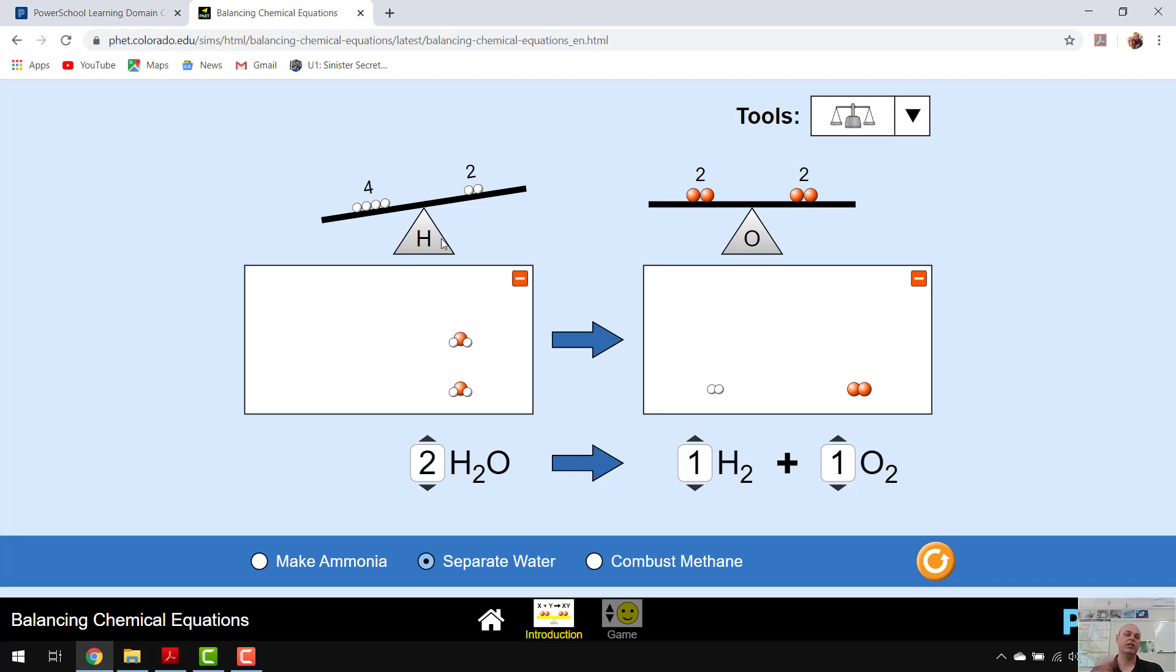Now I look at my hydrogens. They're unbalanced. Four on the left and two on the right. So I need to increase the amount that I have on the right. And I can do that by adding moles. That's the only thing that we can do is change the number of moles. So if I increase that, that now puts me in balance. I have four hydrogens on this side, four hydrogens on this side, two oxygens on both sides.